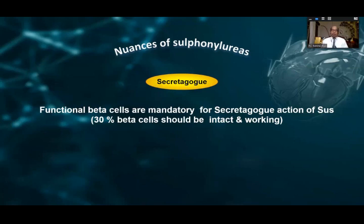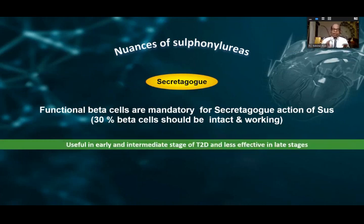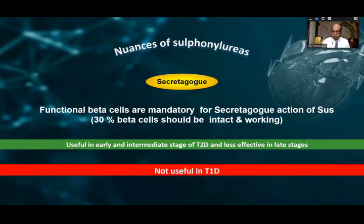Before looking at modern sulfonylureas, it is important to understand the nuances of sulfonylureas. Firstly, sulfonylureas are mainly secretagogues, which means functional beta cells must be present for their action, and about 30% of beta cells should be intact. Therefore they are very useful in early and intermediate stages of type 2 diabetes and are less effective in late stages as beta cells start declining. Obviously they cannot be used in type 1 diabetes.